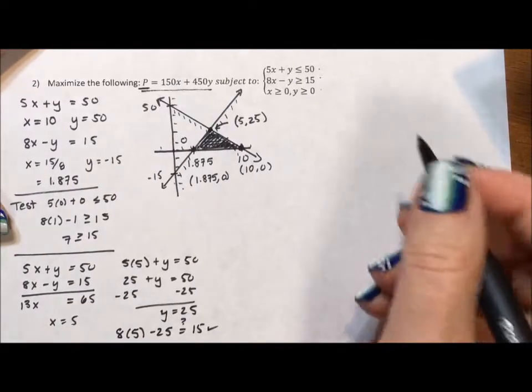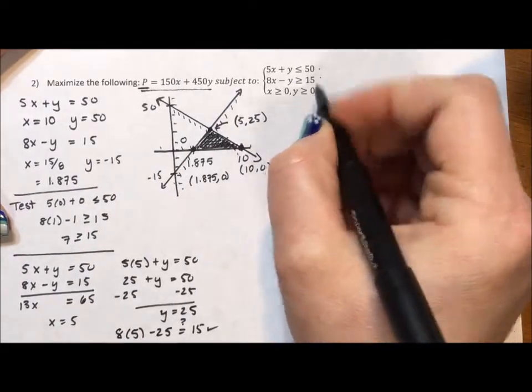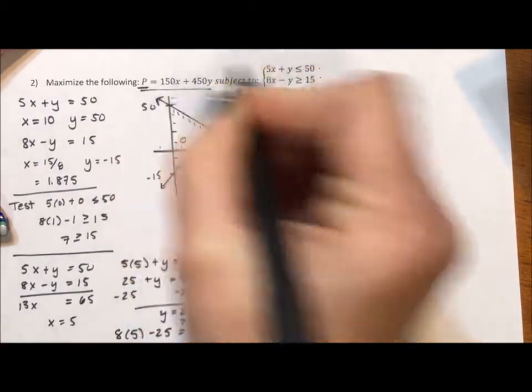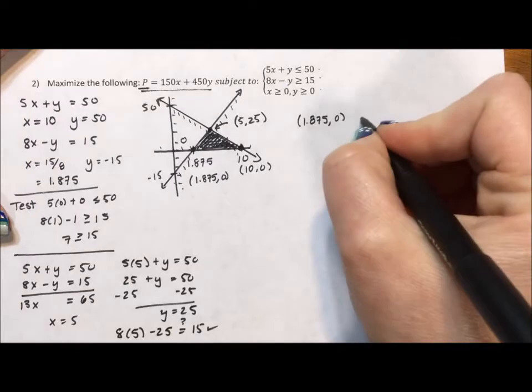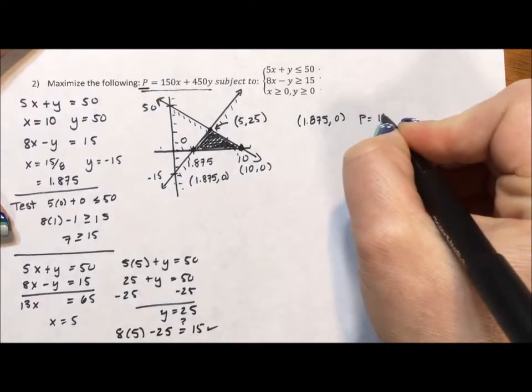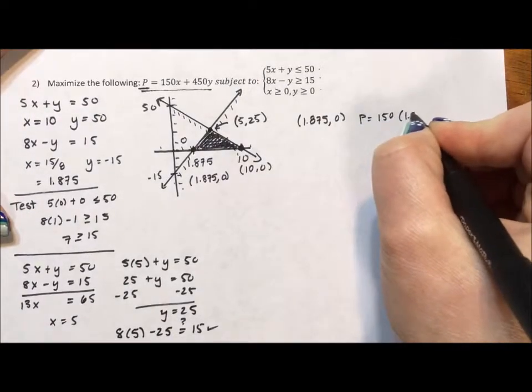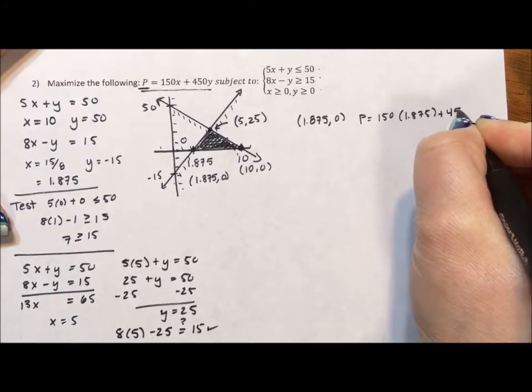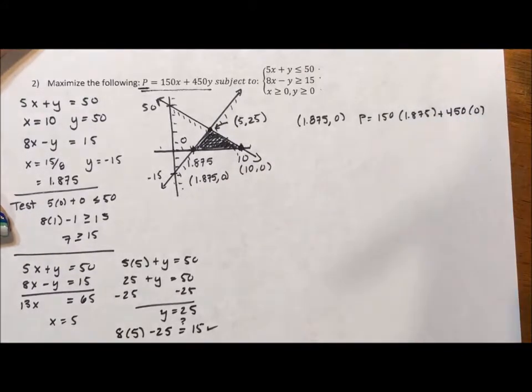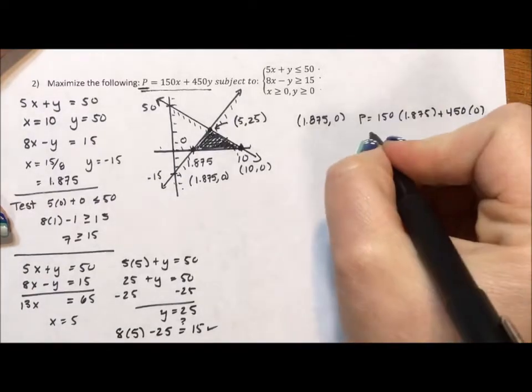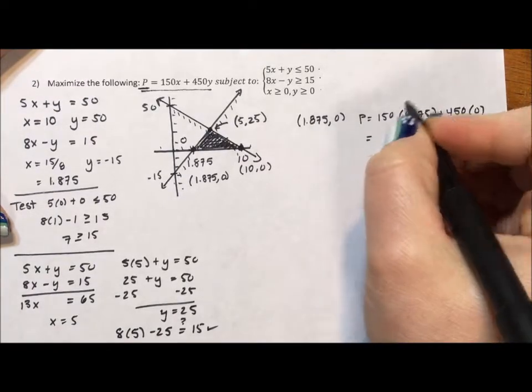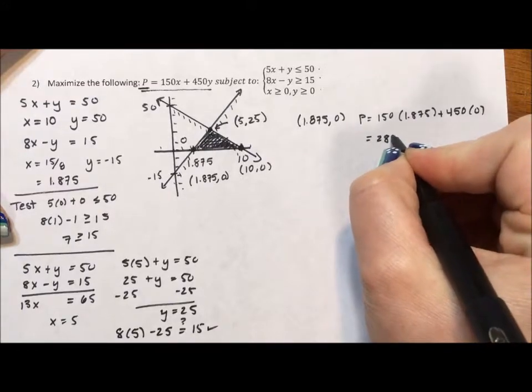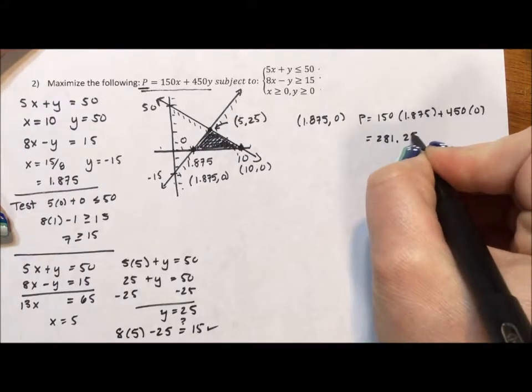So now I do my testing. If I test the point 1.875, 0 with this equation, what I'm going to have is P equals 150 times 1.875 plus 450 times 0. And this is going to equal 281.25.